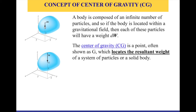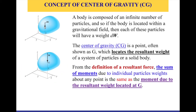A body is composed of infinitesimal dws — many, many dws — and we have one center of gravity. If we want to link these together, from the definition of a resultant force, we need to make sure that the sum of moments due to individual particles' weight — looking at the top schematic with all the many dws — should be the same as and equal to the moment due to the resultant weight W located at G in the second schematic. That's how we are connecting these things together: the sum of moments from all individual infinitesimal particles dw should equal the moment due to the resultant weight located at the center of gravity. That is the definition of the center of gravity.